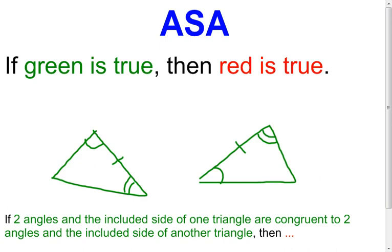Next one is the ASA. Again, we have two angles that are congruent in the two triangles, and the included side. Notice that it's the included side. If that happens, the two triangles are going to be congruent using the ASA theorem.